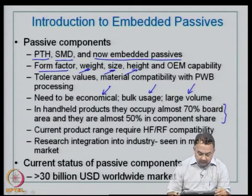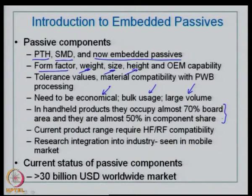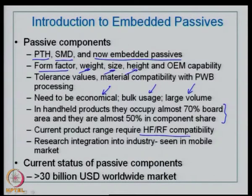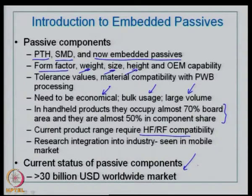Current product ranges require high frequency and RF compatibility, and research integration into industry is currently seen in the mobile market. For embedded passives, some integration of research results into the mobile market is occurring, whereas for other products it is still in the prototyping stage. Materials used for fabrication must be compatible from the point of view of high frequency. The worldwide market share of passive components is more than 30 billion US dollars, making it a very large market.